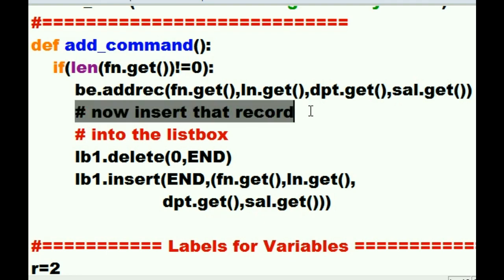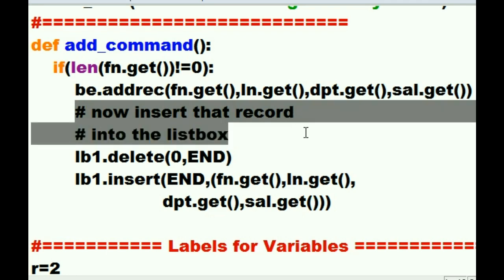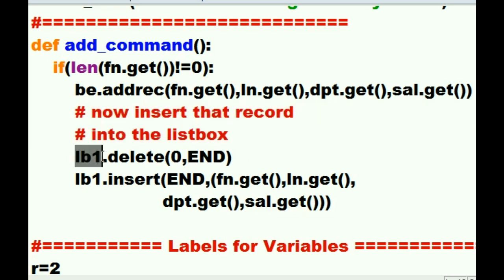Now I want to insert that record into the list box on the bottom of the screen. How do I do that? Well, I say Mr. Listbox. He says, yes. I want you to delete something for me. What would you like me to delete? Well, go to the very beginning of your list box and all the way to the end of the list box, highlight everything. He says, okay, I've done that. Delete it all.